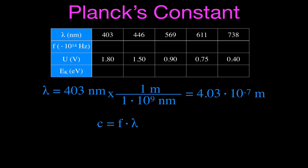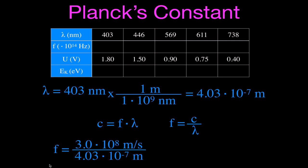We need meters because we're going to use the equation C = frequency × wavelength to come up with the frequency. The speed of light is 3.0×10^8 meters per second, so we rearrange the equation for frequency as C divided by the wavelength. Taking the speed of light 3.0×10^8 m/s and dividing by our wavelength in meters, we get that the frequency for 403 nanometers is 7.44×10^14 hertz.